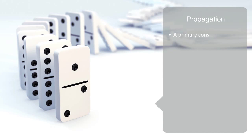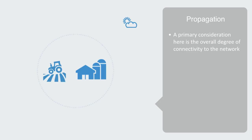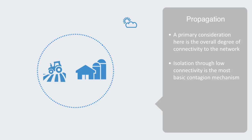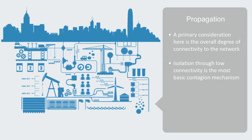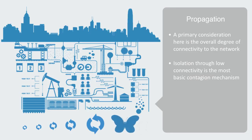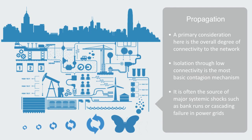Next, we need to consider how failures spread within the system. A primary consideration here is the overall degree of connectivity to the network. With a relatively isolated system, like a small farm in a rural community, failures don't spread very far. Isolation through low connectivity is the most basic contagion mechanism. But if we take an urban center like central Hong Kong, a dense network of many interconnected infrastructure systems have to be working for it to run smoothly, and small glitches propagate quickly. In these highly interconnected and coordinated systems, we can get positive feedback loops that work to amplify some small change into a large effect — the butterfly effect. In these highly interconnected systems, it is often the source of major systemic shocks, such as bank runs or cascading failures within power grids.